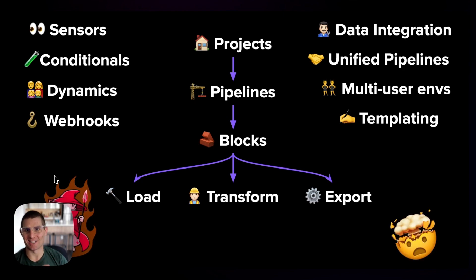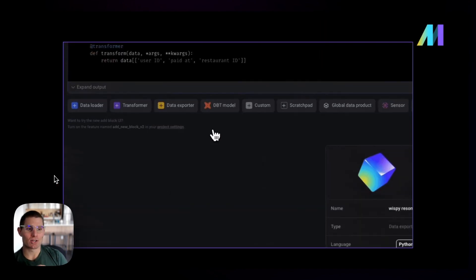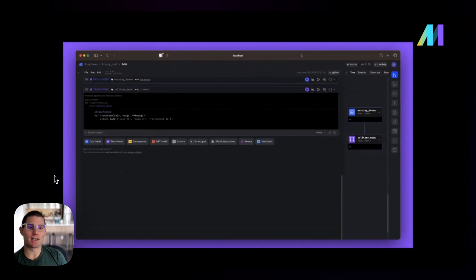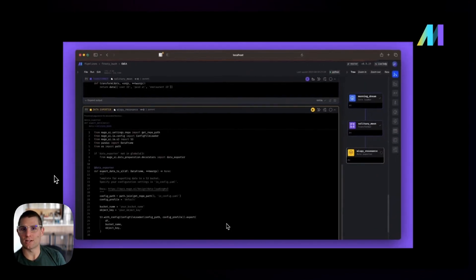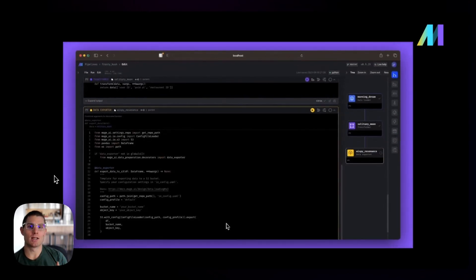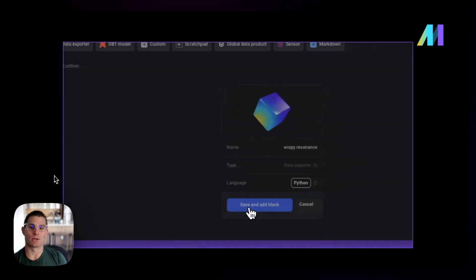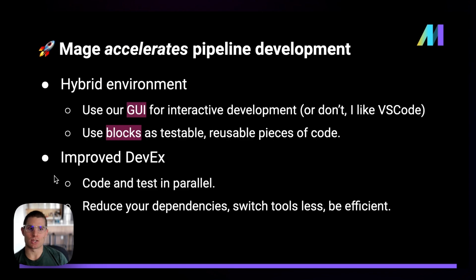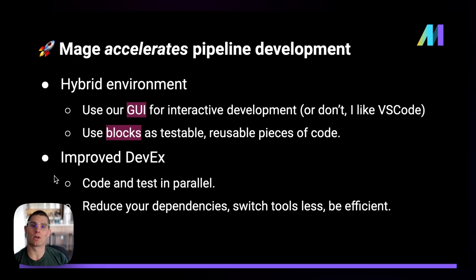That's kind of what makes Mage magical — it creates this really slick editing experience. This is just a gif of our user interface, something that's also unique to the tool: a unique editing experience for building, developing, and sharing data pipelines with the rest of your team. That's kind of how Mage accelerates pipeline development. We have this hybrid environment — our GUI, our graphical user interface for interactive development. But at the same time, you can also do anything with code that you can in the GUI. You can develop purely in VS Code and that'll sync, that'll flow right through to the user interface.